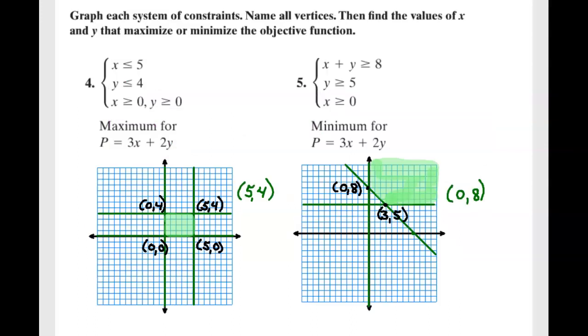So in example number five you were graphing the line x plus y greater than or equal to 8. You're graphing the line y greater than or equal to 5, and the line x greater than or equal to zero. So a y line is horizontal, the x line is up and down, and then the x plus y gives you the line that is diagonal.